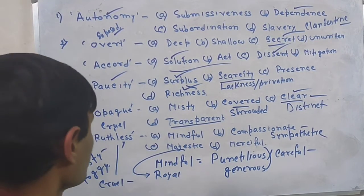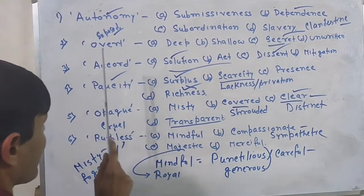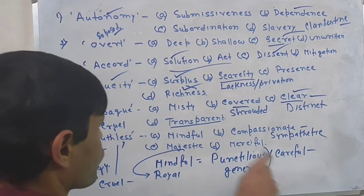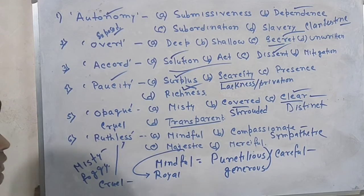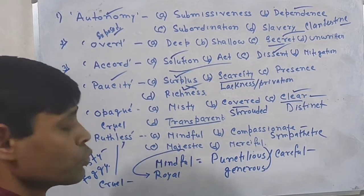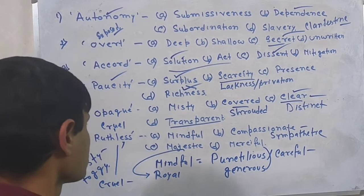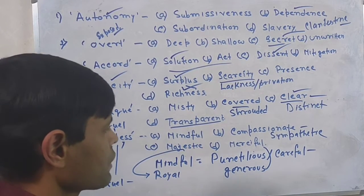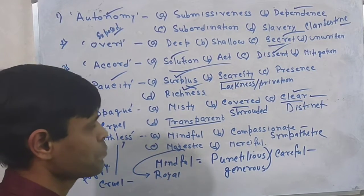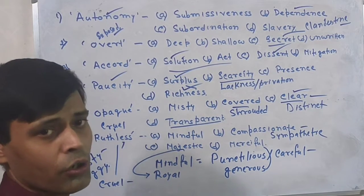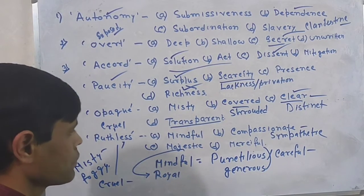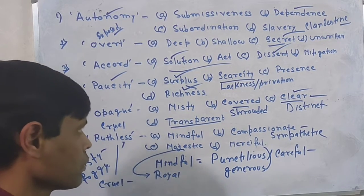So to summarize: Autonomy → Dependence, Overt → Secret, Accord → Dissent, Paucity → Richness, Opaque → Transparent, Ruthless → Merciful. We have to know the meanings of all options, otherwise we will make mistakes during the exam. Ruthless means cruel, barbarous, or relentless — heartless. Merciful means generous, kind, lenient. This is my class for the day.